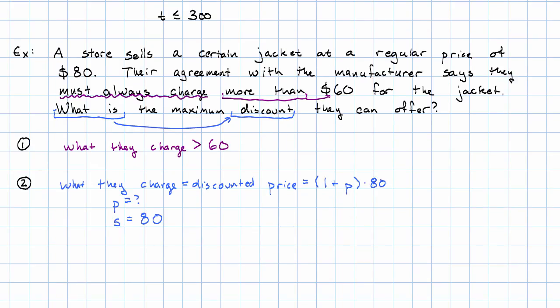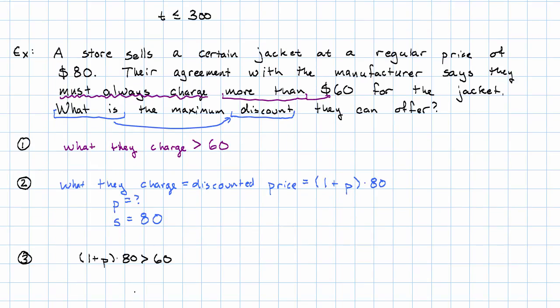Putting that together, then, 1 plus P times 80 is greater than 60. Okay, now what?